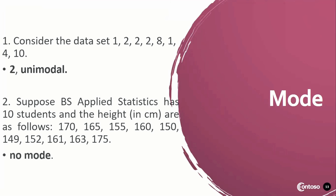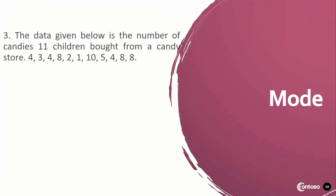Third example: the data given below is the number of candies 11 children bought from a candy store: 4, 3, 4, 8, 2, 1, 10, 5, 4, 8, and 8. The most frequently occurring data are 4 and 8, which both appeared three times. Since we have two modes — 4 and 8 — this is considered bimodal.